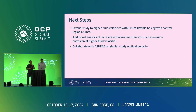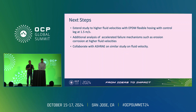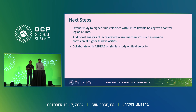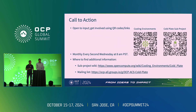In terms of next steps, we want to focus on the control leg at 1.5 meters per second and do additional analysis of the copper surfaces at higher fluid velocities. We're also working with ASHRAE on the RTAR with Mark Stenke and others to try to address this and see if we can get the limits updated if needed, given the feedback we're getting from various folks on the justification behind the 1.5 meters per second fluid velocity limit. As a call to action, please do join the cold plate subproject and cooling environment calls. Thank you all for sticking around — let us know if there are any questions.